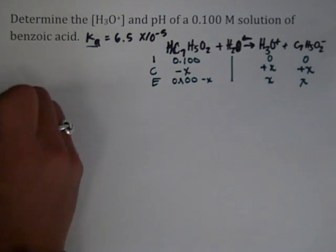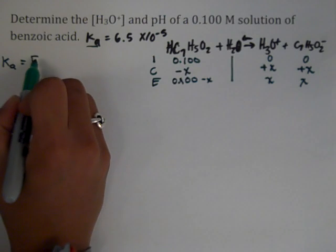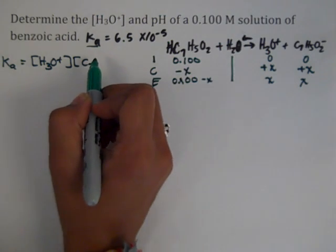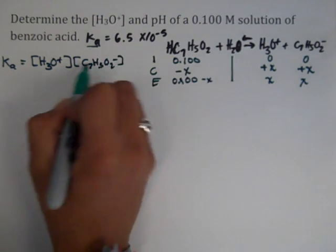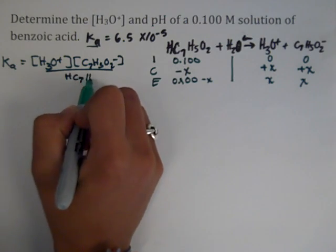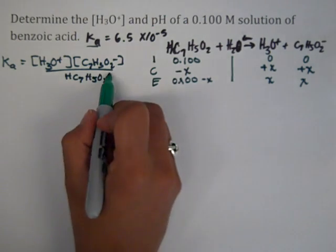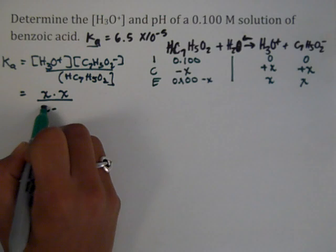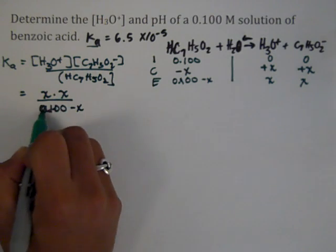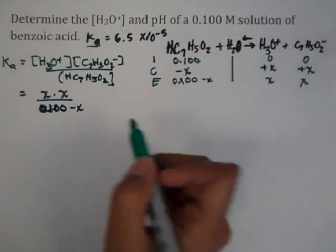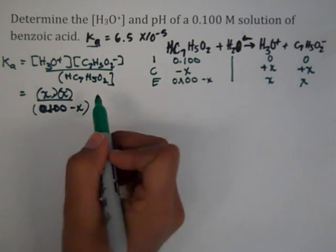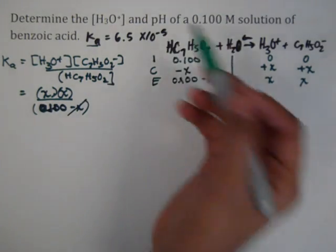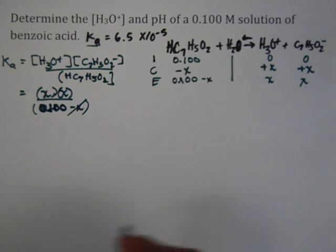Remember, our expression for Ka is going to be concentration of hydronium and its conjugate base over the weak acid. So that all sums down to x times x over 0.1 minus x. Remember, we're going to use our assumption and cross this guy off because our Ka is small and this is pretty big.